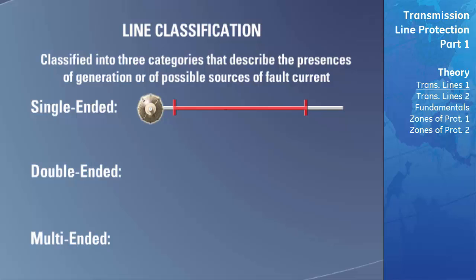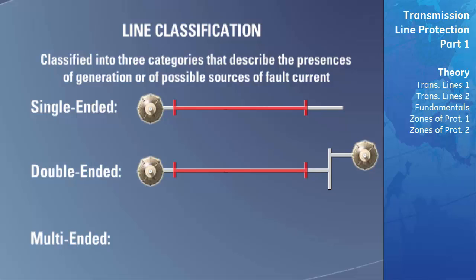A double-ended line has only two boundaries, each of which can have a source of fault current available. This type of line is used to deliver power, usually in different directions at different times. If a fault occurs on this transmission line, current will be fed to the fault from two locations.